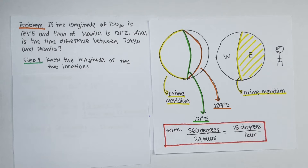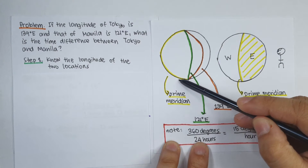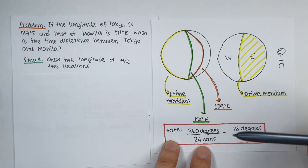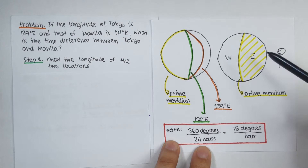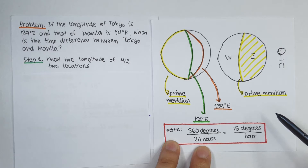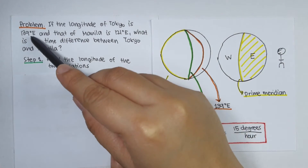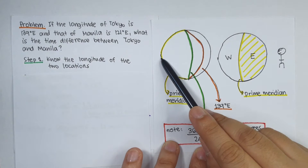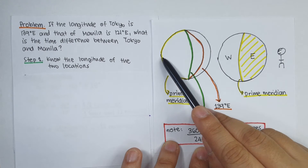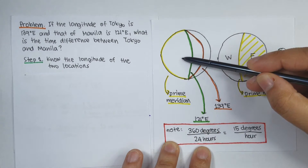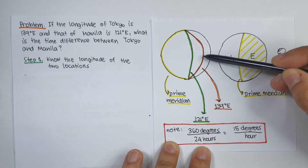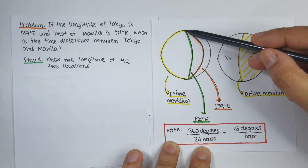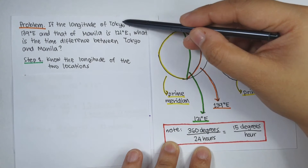Let's try to plot our problem so we can at least visualize it. Say for example, this is our prime meridian at zero degrees longitude. So right now we are facing the east side of the globe. If the longitude of Tokyo is 139 degrees east, meaning from the prime meridian you have to move 139 degrees to the right — that's going east. So somewhere along this line is Tokyo.